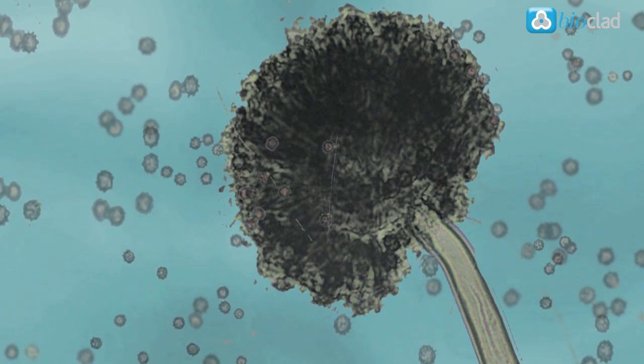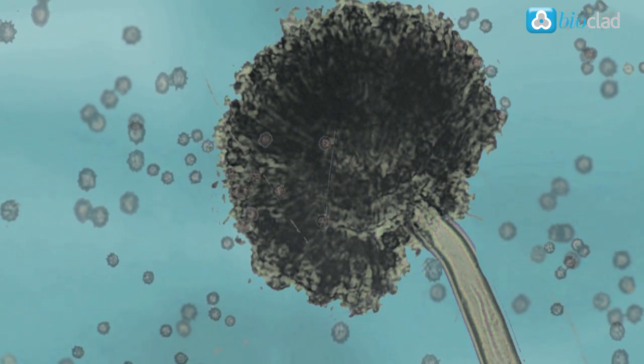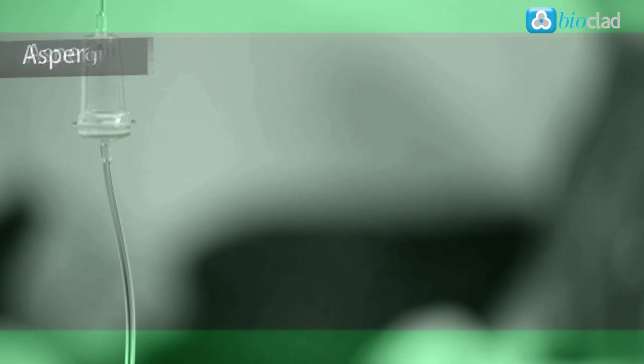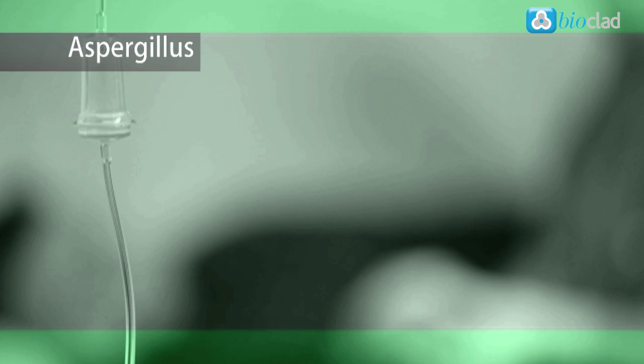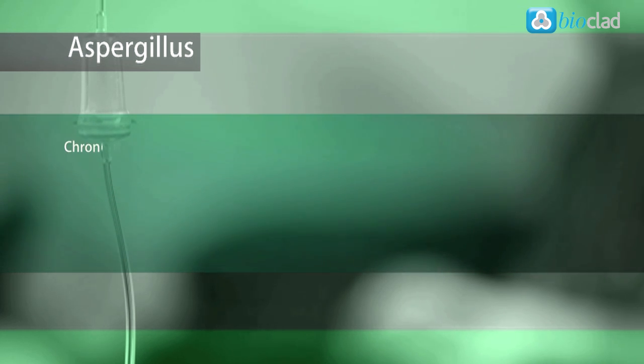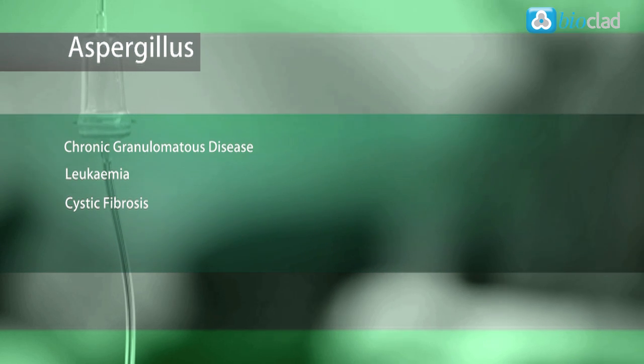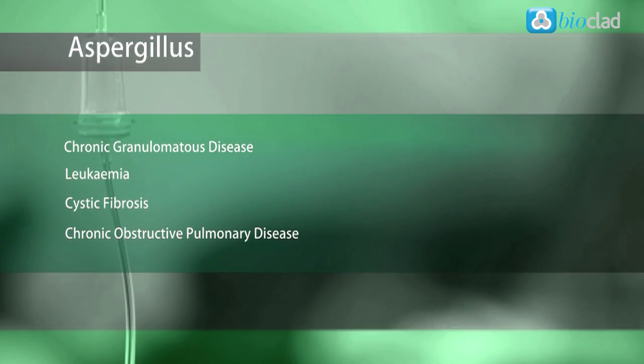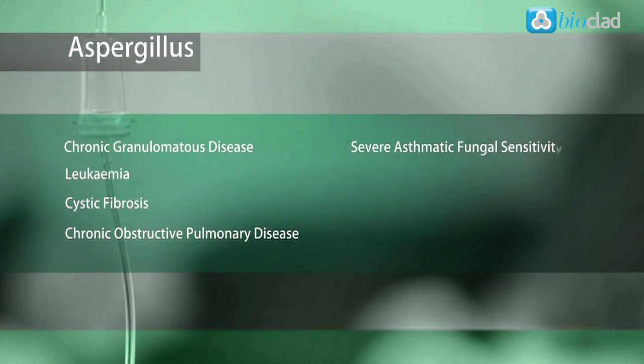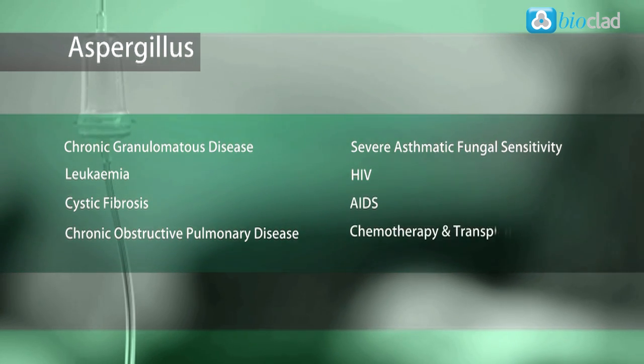Exposure to Aspergillus can lead to a group of diseases collectively known as Aspergillosis. This can affect patients whose immune system may be compromised, such as those with chronic granulomatous disease, leukemia, cystic fibrosis, chronic obstructive pulmonary disease, severe asthmatic fungal sensitivity, HIV, AIDS, and chemotherapy and transplant patients.